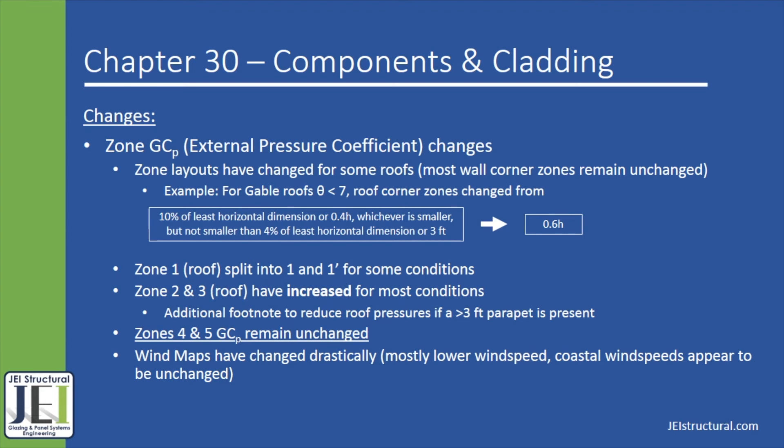Perhaps the largest thing worth noting is that the external pressure coefficients for zone 5 — the walls located at a building's corner — and zone 4 — walls not located at corners — have not changed. This is significant because since the wind speeds have generally decreased for most of the United States, and if you utilize the new elevation factor to reduce the pressures even further, there will be a net reduction of wind pressures on walls for components and cladding in the 2018 International Building Code.